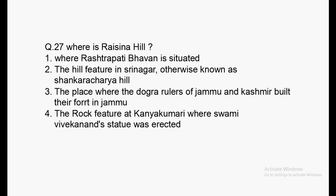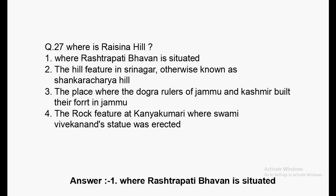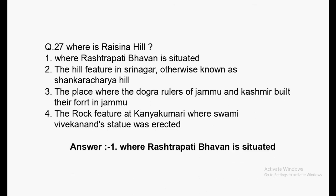Next question: Where is Rashtrapati Bhavan situated? Options include: a hill feature in Srinagar known as Shankaracharya Hill; the place where Dogra rulers of Jammu and Kashmir built their fort in Jammu; a feature of Kanyakumari where Swami Vivekananda's statue was erected. Answer: Rashtrapati Bhavan is situated on Raisina Hill.